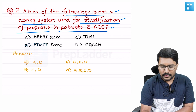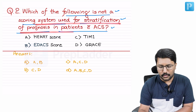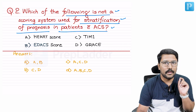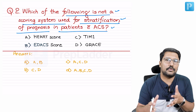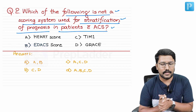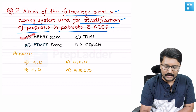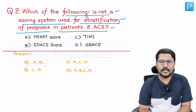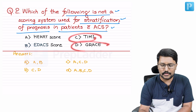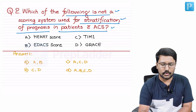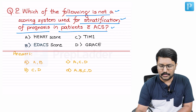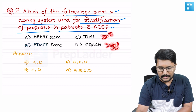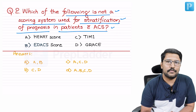In this question, he is asking which of the following is not a scoring system for stratification of prognosis — he is not asking about the scoring systems used for stratification of risk of acute coronary syndrome in a patient presenting with chest pain. The options are HEART score, EDACS score, TIMI score, and GRACE score. We are all familiar with TIMI and GRACE scores, which we discuss whenever we talk about non-ST elevation acute coronary syndrome.